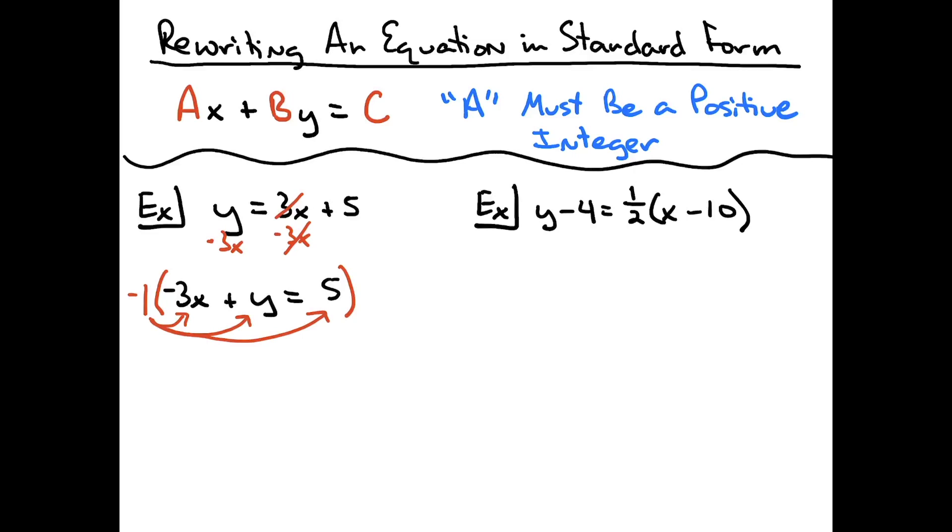Thus making that a coefficient a positive 3. So then we'll have a positive 3x and a minus y and then equals negative 5. So that is rewriting that first equation into standard form.